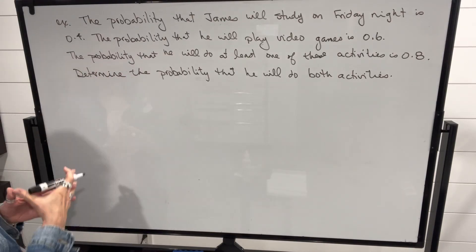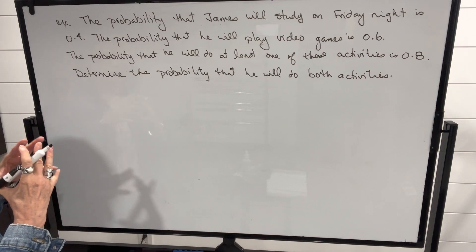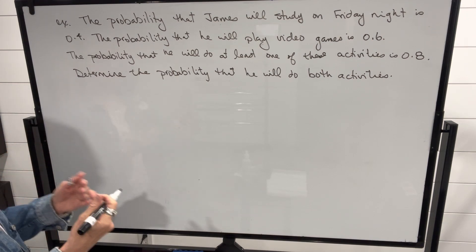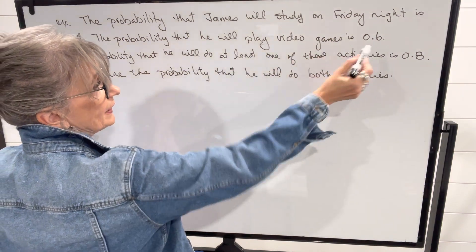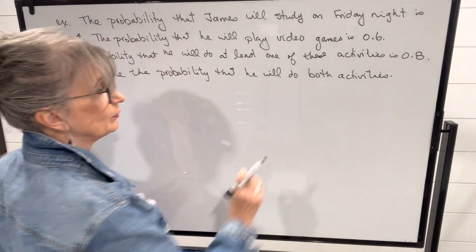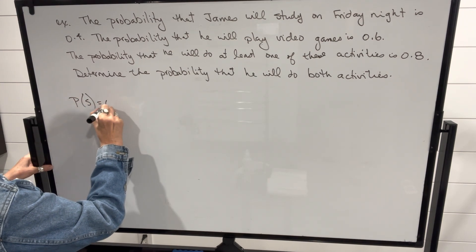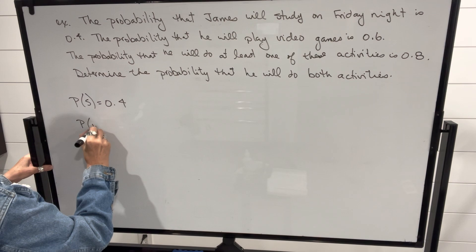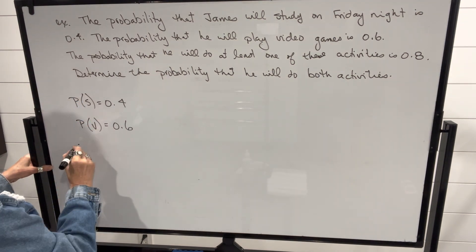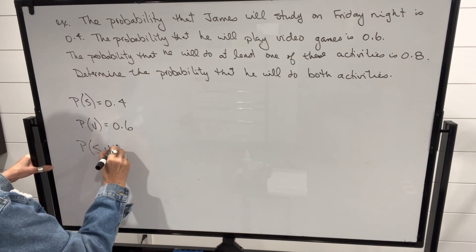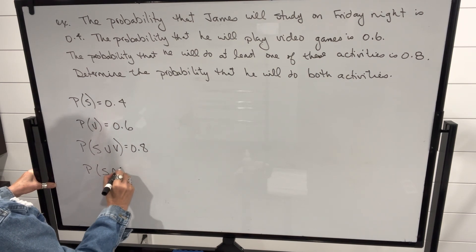Another question from the last video: the probability that James will study on Friday night is 0.4, and the probability that he will play video games is 0.6. Instead of telling us the probability that he'll do both, they tell us the probability that he will do one or the other or both — at least one of the activities — is 0.8. They're asking us to find the probability that he will do both activities, meaning study and play video games.